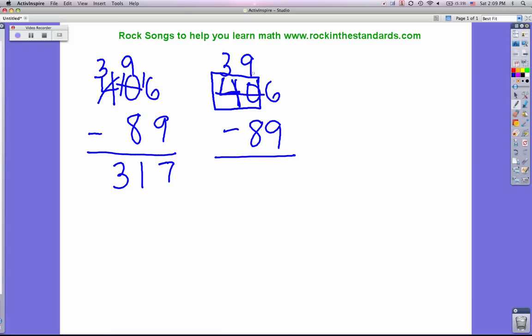I keep the digits lined up: the 3 with the 4, the 9 with the 0. I just took one away from 40 and put that one, which is actually a 10, right here with the 6. 16 minus 9 is 7, 9 minus 8 is 1, and 3 take away nothing is 3. You can see the answers come out the same, but I think this process is a little bit simpler.